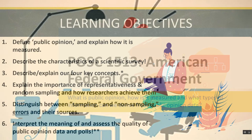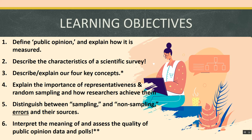We have a series of six learning objectives for you to focus on as you begin to take your notes and move through lecture. Number one: define the term public opinion and explain how it is measured. Number two: describe the characteristics of a scientific opinion survey or public opinion poll. Number three: describe and explain our four key concepts — population, sample, inferential statistics, and margin of error. You need to know what these terms mean within the context of public opinion and be able to apply them in order to complete assessments.